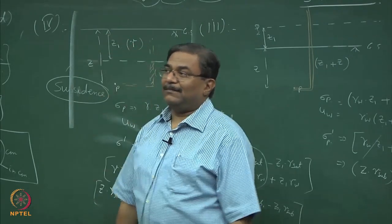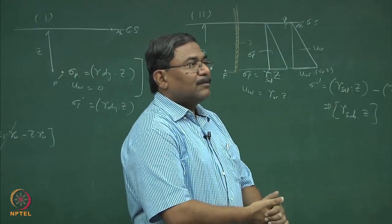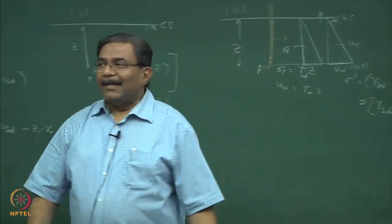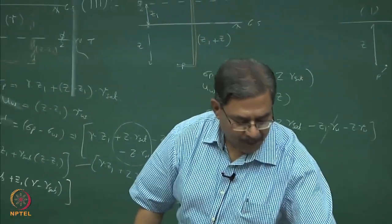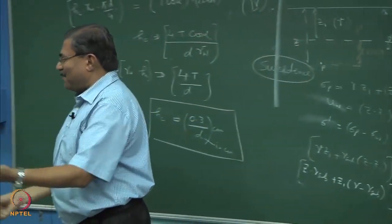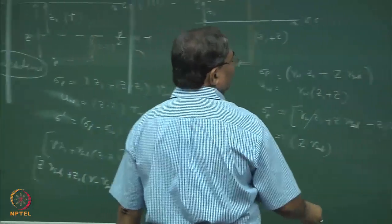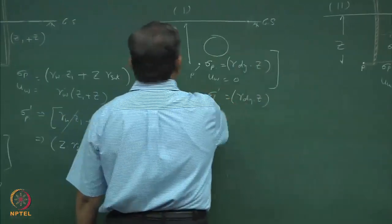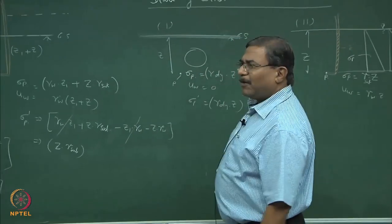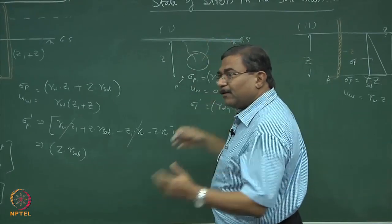Underground tunneling — Bombay city is having the maximum number of tunnels now. Very close to IIT there is a big failure. If you are doing tunneling and are not careful, you create a void and water starts entering the tunnel. You have created a water table lowering situation.